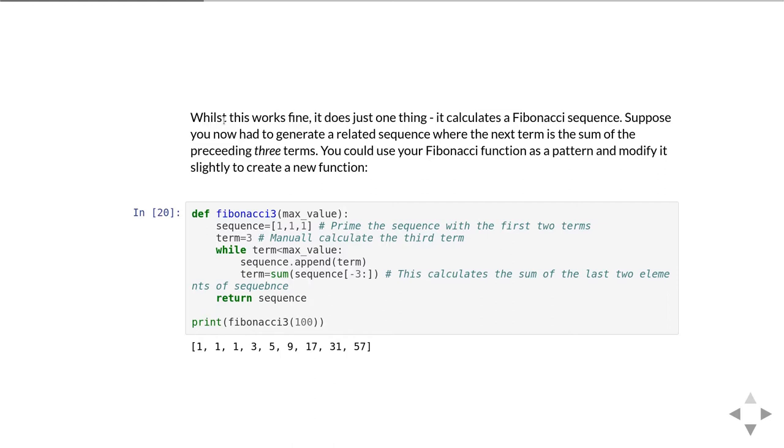Then we have the same sort of while loop except this time when we calculate the new term inside the while loop it's the sum of the last three elements of the sequence. We continue around as we get to the maximum value and then we return the sequence.